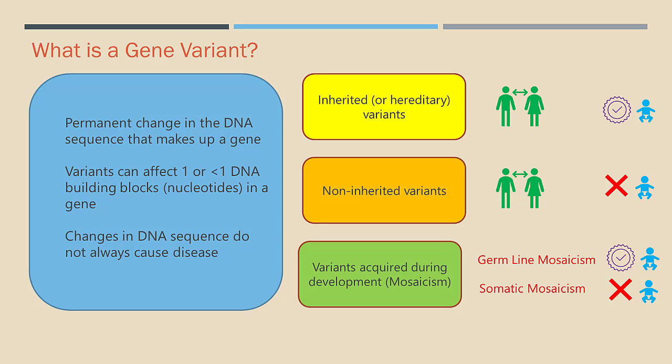Inherited or hereditary variants are passed from parent to child and are present throughout a person's life. These variants are also called germline variants because they are present in the parent's egg or sperm cells, which are also called germ cells. Non-inherited variants occur at some time during a person's life and are present only in certain cells, not in every cell in the body. These variants cannot be passed to the next generation.